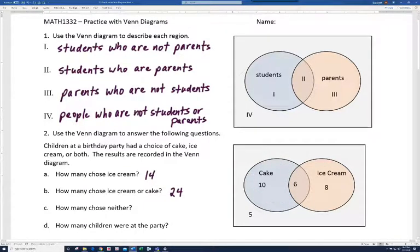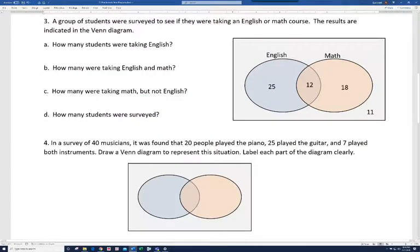All right. So, how many chose neither? That's these five out here. And then, how many children were at the party? Well, if you add up all the numbers here, you've got 14 and 10 is 24, and another 5 is 29. All right. Let's move on to the next slide.